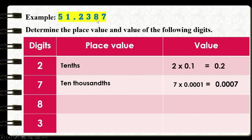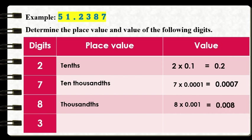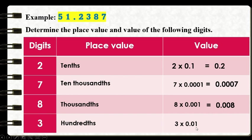How about 8? The digit 8 is in the third place from the right of our decimal point — tenths, hundredths, thousandths place. To get the value of 8, we multiply it by 1 thousandths, so 8 times 1 thousandths equals 8 thousandths. Lastly, the digit 3 occupies the second place from the right of our decimal point — tenths, hundredths. To get the value of 3, we multiply it by 1 hundredths, so 3 times 1 hundredths equals 3 hundredths.